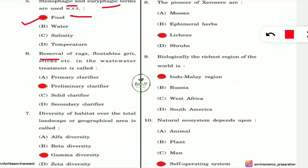Question 6: Removal of rags, floatables, grit, sticks, etc. in wastewater treatment is called what? These are removed in the initial stage of wastewater treatment — the preliminary clarifier stage — where material visible to the naked eye is cleared from the water.